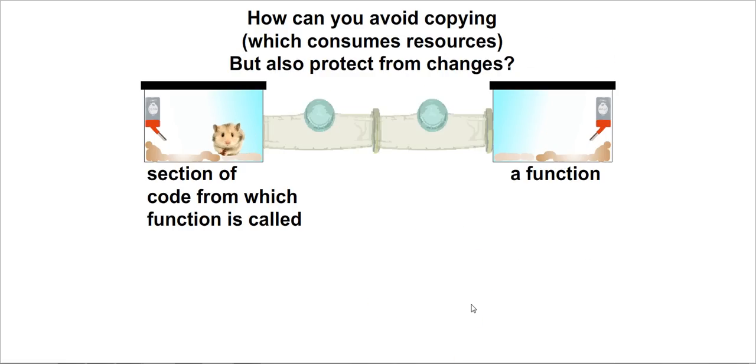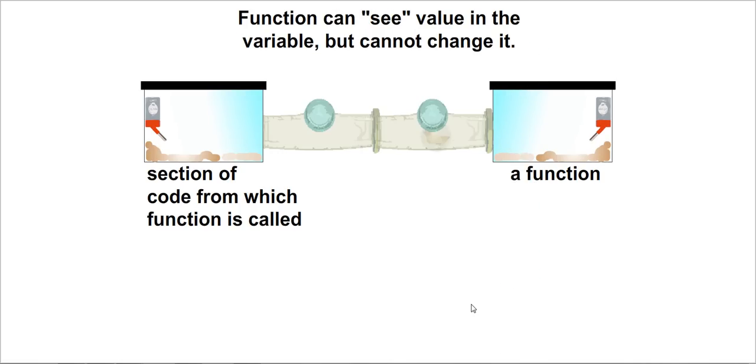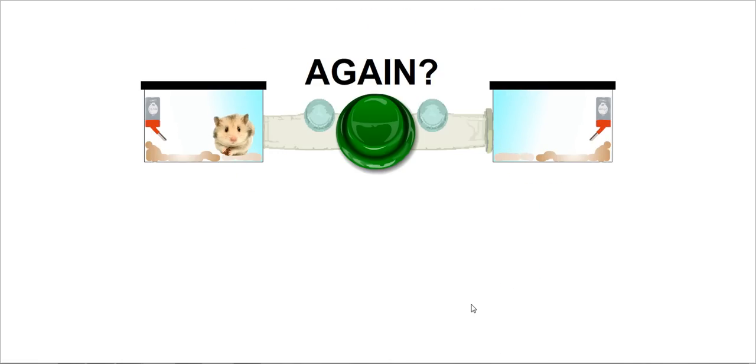Now, the question is, what if you don't want to make a copy because something is big, but you don't want to let it be changed? Well, you can sort of wrap it in a hamster ball by marking it const. So it sends a reference to the real variable, but no changes can be made to it. And so you protect it, and you also avoid making a copy of a large object.